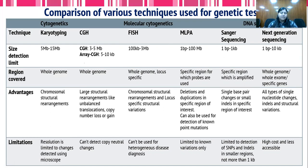Based on the understanding or phenotyping of the individual's disease, we can choose which technique or genetic test has to be performed. For example, if Down syndrome is suspected, we can directly go to karyotyping and detect if there is a change in chromosome number. However, if the disease is sickle cell anemia — which is a single-base resolution change — we cannot use karyotyping; instead, we have to undergo Sanger sequencing or next generation sequencing.